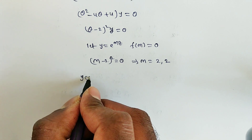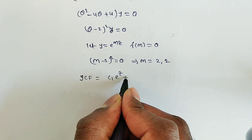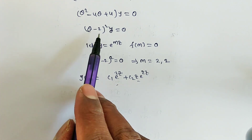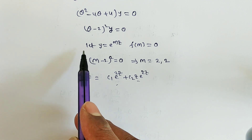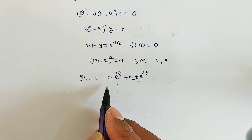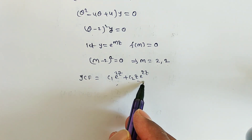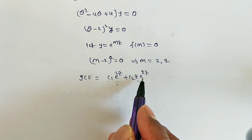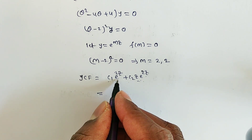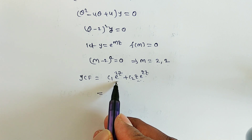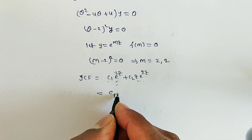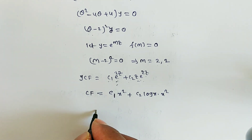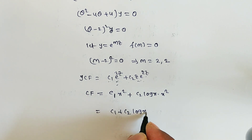Since θ is differentiation with respect to z and the roots are m = 2, 2 (repeated), the complementary function in terms of z is: y_cf = c₁ e^(2z) + c₂ z · e^(2z). Now replacing z using x = eᶻ: e^(2z) = x², and z = log x. So y_cf = c₁x² + c₂ log(x) · x² = (c₁ + c₂ log x) · x².